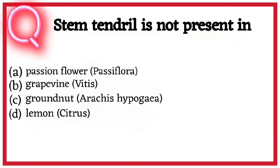Ninth question. Stem tendril is not present in A. Passionflower (Passiflora), B. Grapevine (Vitaceae), C. Groundnut (Arachis hypogea), D. Lemon (Citrus). So correct answer hai option D. Lemon.